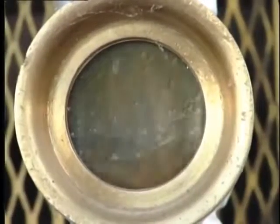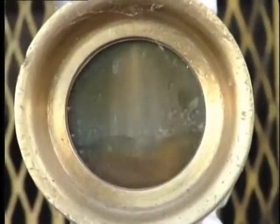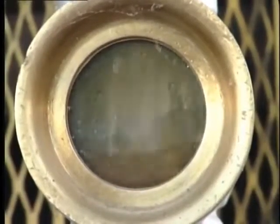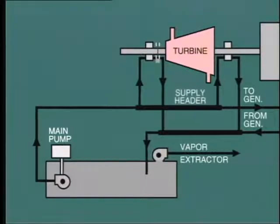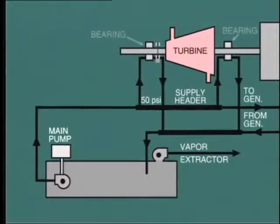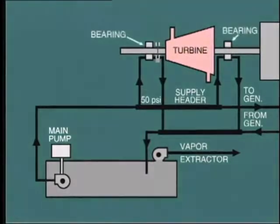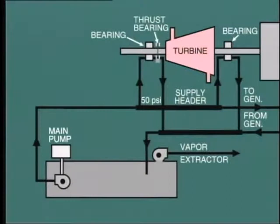A continuous flow of lube oil must be circulated through all of the turbine and generator bearings. Typically the arrangement would look like this for a single cylinder machine. The lube oil supply header is maintained at about 50 PSI, and from here the oil is force fed through each of the bearings, including the turbine thrust bearing.